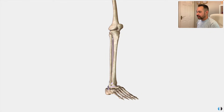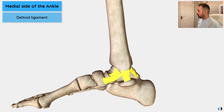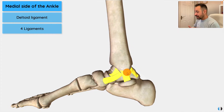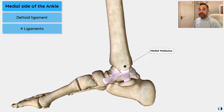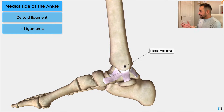Moving across to the medial side of the ankle, the next ligament set is the deltoid ligament. The deltoid ligament is a collective term referring to four ligaments on the medial side of the ankle. It has a clear triangular shape in appearance and is really, really strong. The apex of this triangle meets at the medial malleolus of the tibia — that clear bony prominence you can feel on the medial side of the ankle, which is part of the tibia bone. The bases of those four ligaments attach to different bones.